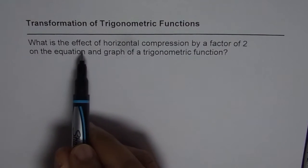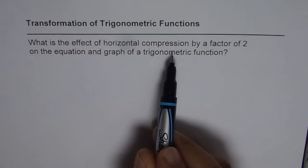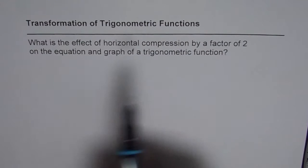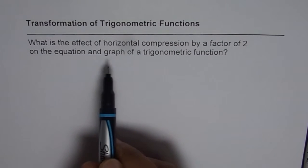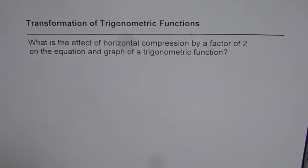The question is, what is the effect of horizontal compression by a factor of 2 on the equation and graph of a trigonometric function?